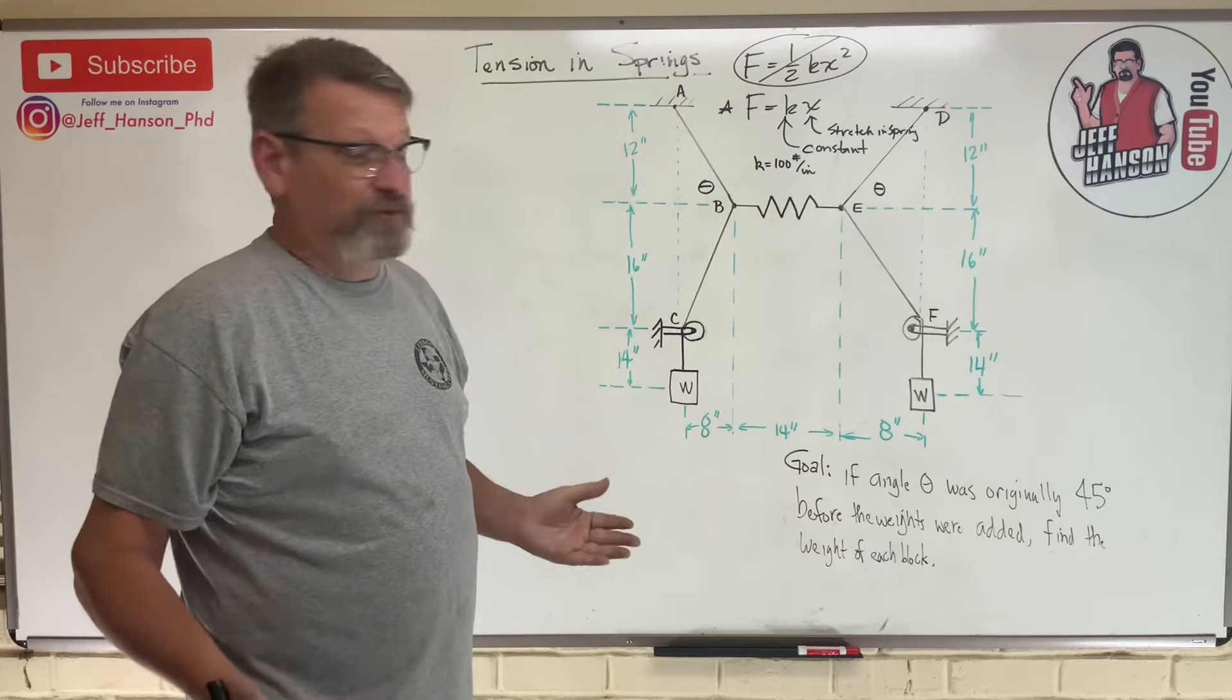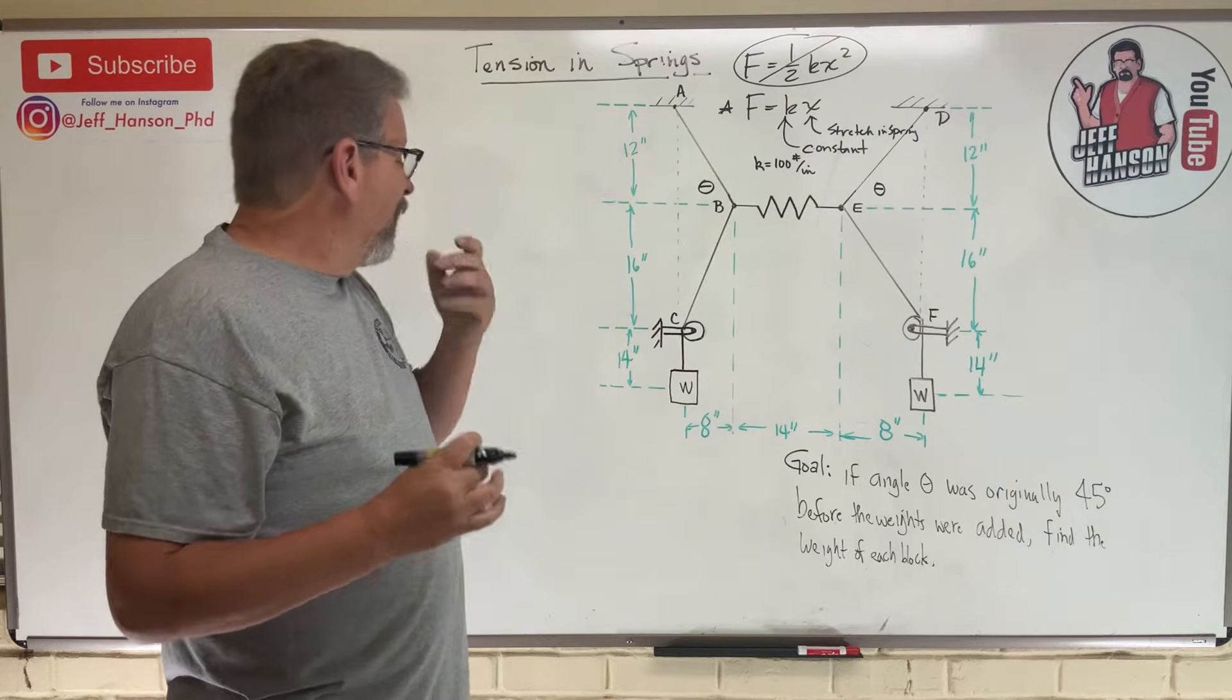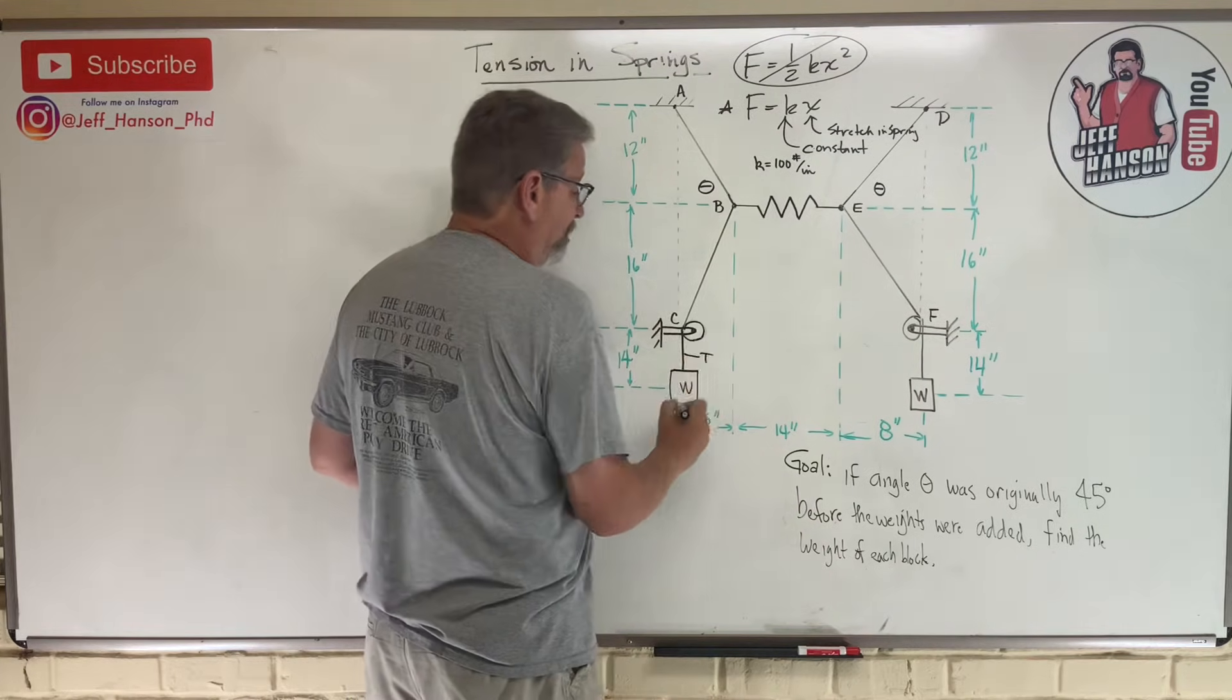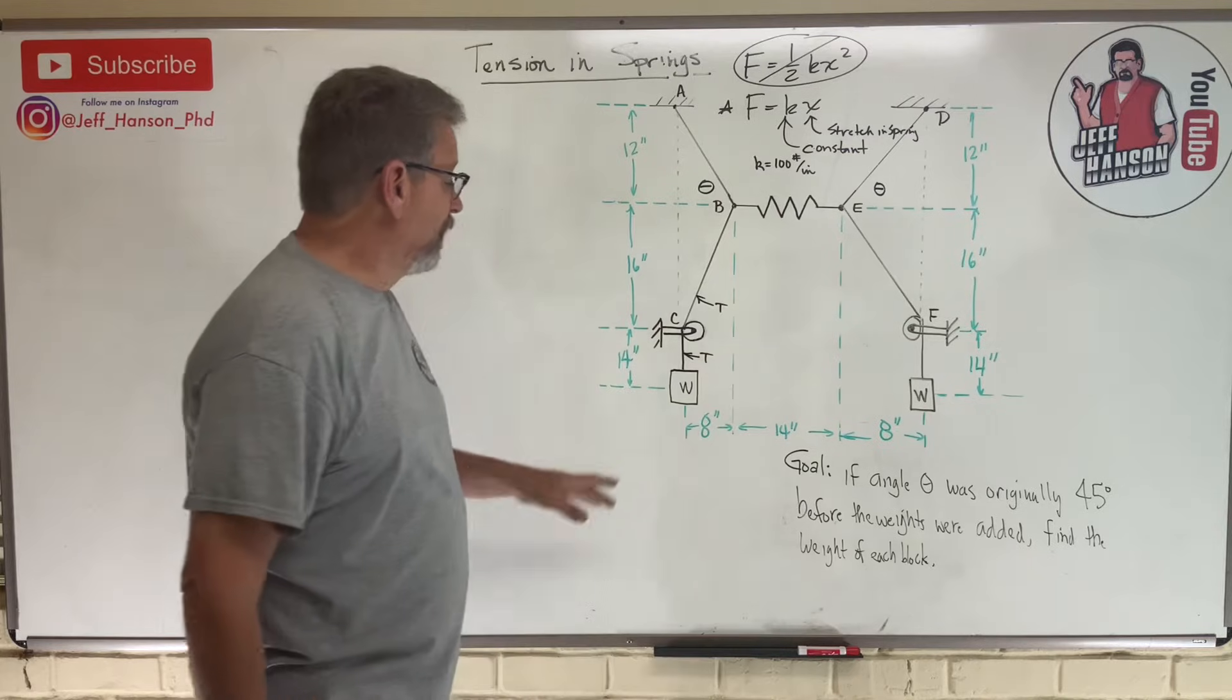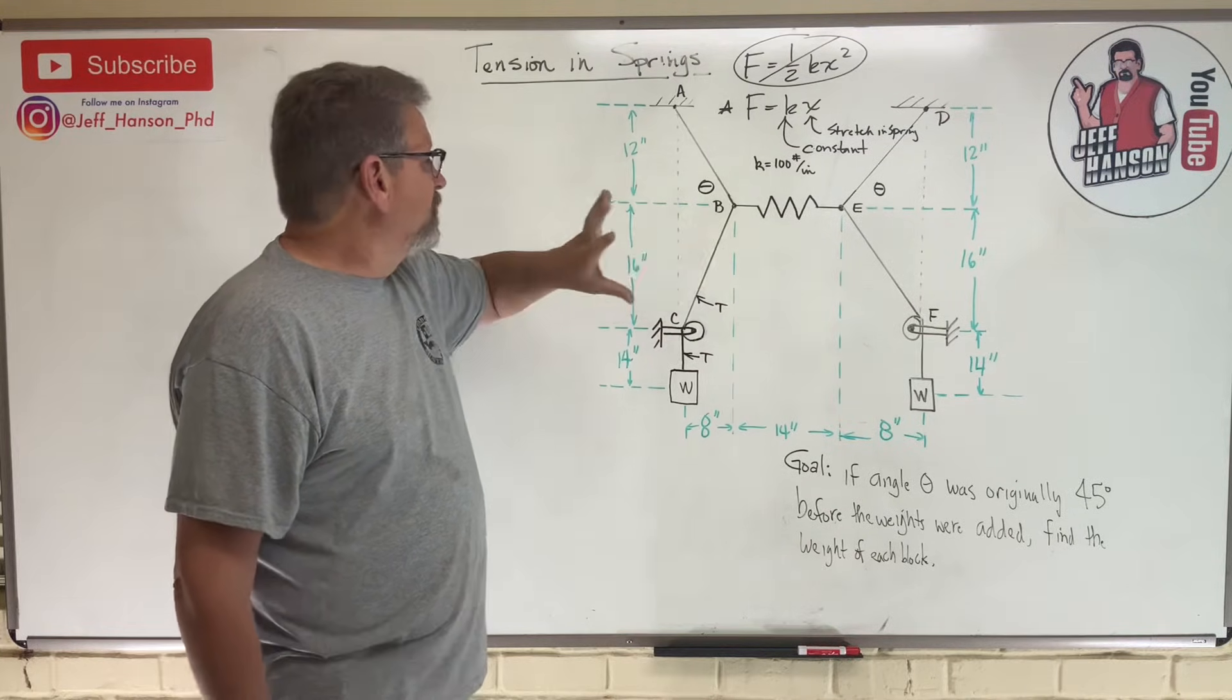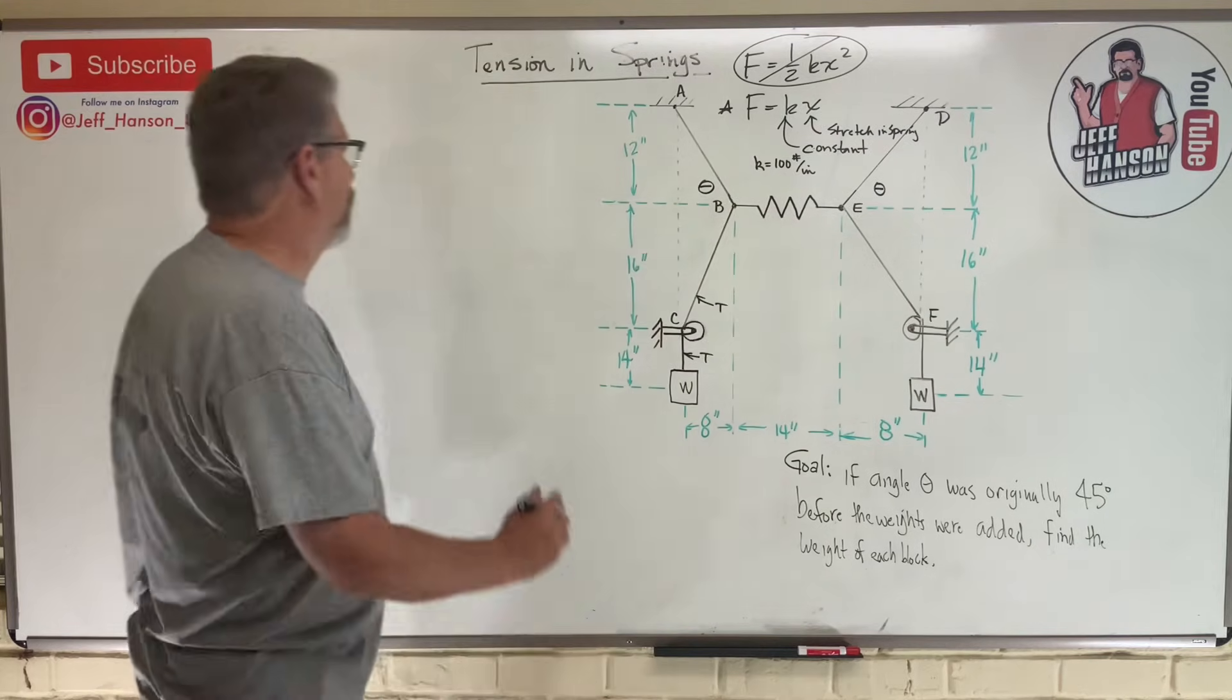First thing I recognize in this problem is this thing is completely symmetric. Whatever is going on on the left half will be going on on the right half, so I only have to solve half this problem. What do we know about a weight going around a pulley? The tension on this side of the pulley is the same as the tension on that side. It's a frictionless pulley, so if this is w, then the force in this cable is also w. We start off by drawing a free body diagram of joint B.